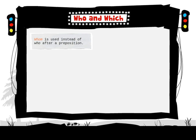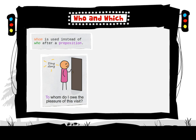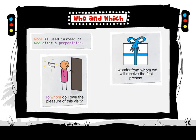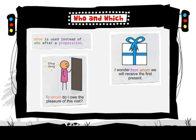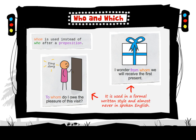Whom is used instead of who after a preposition. For example: 'To whom do I owe the pleasure of this visit?' and 'I wonder from whom we will receive the first present.' It is used in a formal written style and almost never in spoken English.